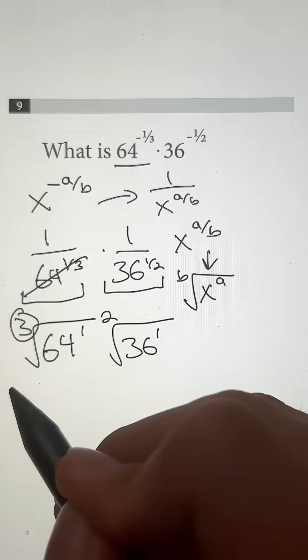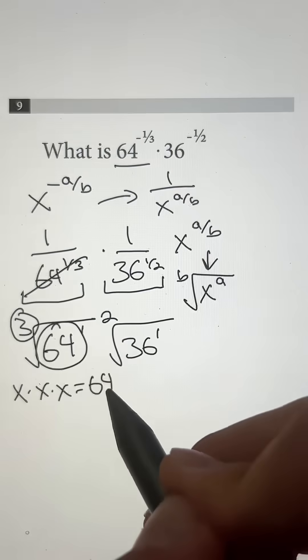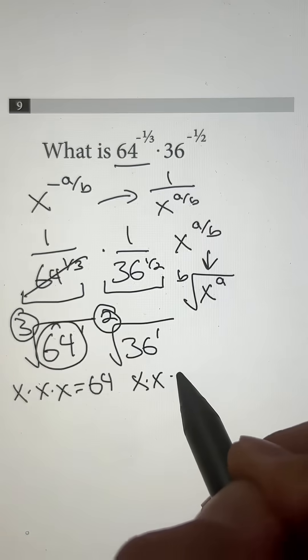And when we have a root of three, that just means what number multiplied by itself three times is going to give us this number, which is 64. And when we have a root of two, that means what number multiplied by itself two times is going to give us 36.